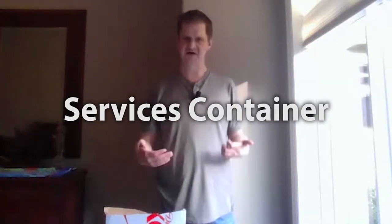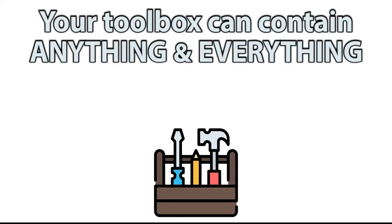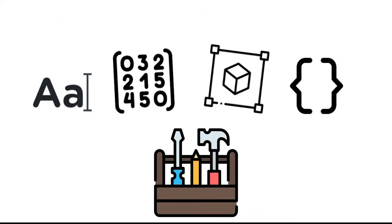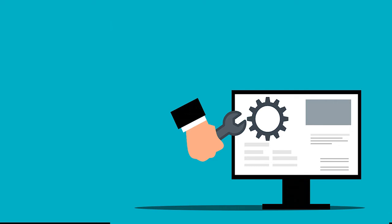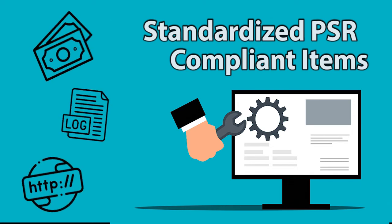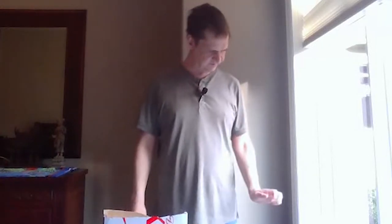Upon looking into dependency injection, one term you'll always come across is services container, or just container in general. What the heck is this container thing? Well, you can think of a container as nothing more than a toolbox. Your toolbox can contain anything and everything you'd like — strings, arrays, objects, closures — whatever you need to help facilitate the software requests. In any project you get involved with, there will almost always be some standardized PSR-compliant items inside here, things like your cache, logger, HTTP client, and things of that nature.